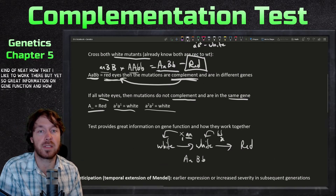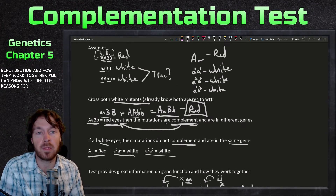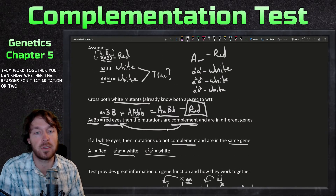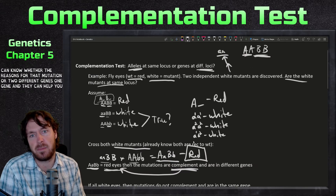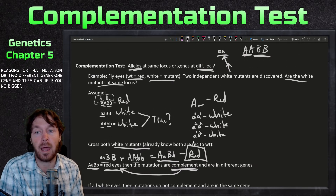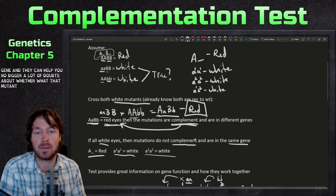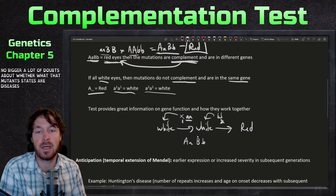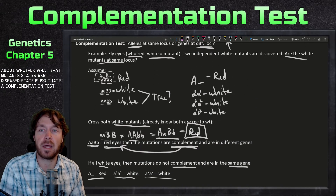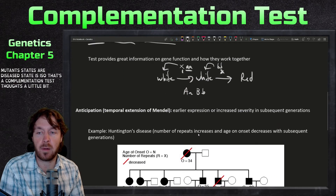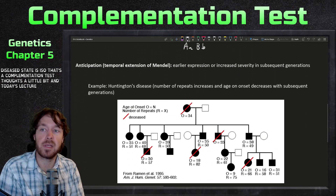So there's great information on gene function and how genes work together. You can determine whether the reasons for a mutation are two different genes or one gene, and it can help you figure out a lot about what that mutant state or disease state is. That covers the complementation test.